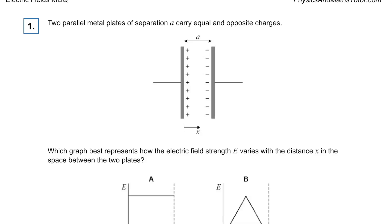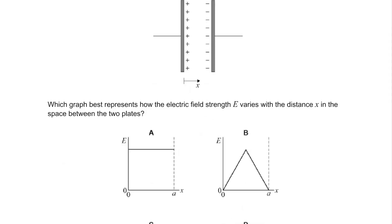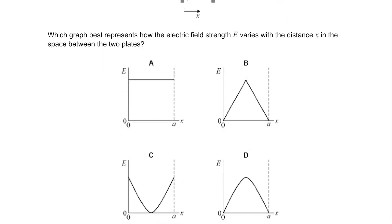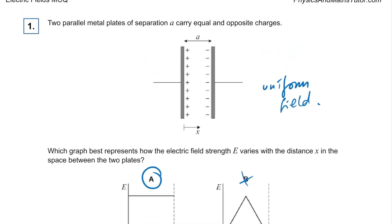Question one: two parallel plates. They have equal and opposite charges, so it's a uniform field. Uniform field literally means the field strength is the same everywhere. Therefore the field strength cannot be changing. The answer has to be A, because the potential changes linearly as you go across — it doesn't get any stronger or weaker.